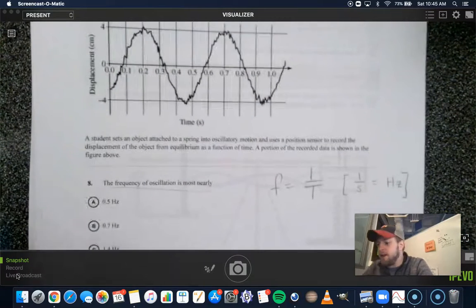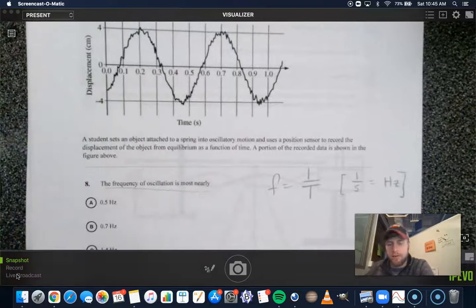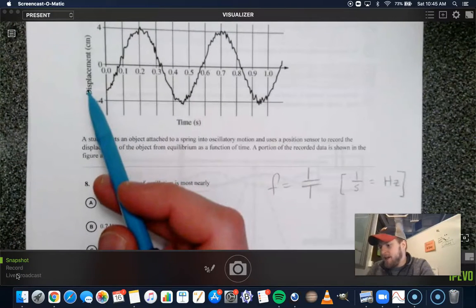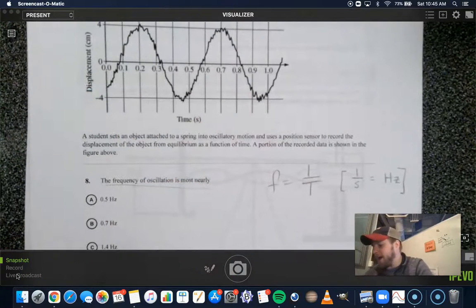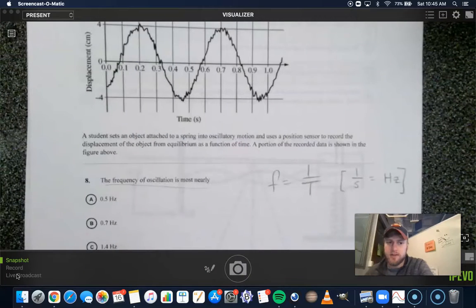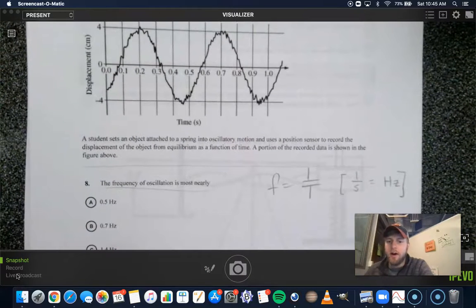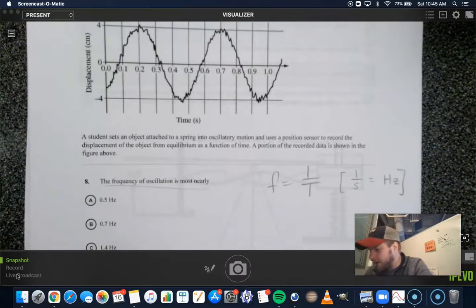Now, it's kind of interesting. They could give us a velocity graph, a displacement graph, or an acceleration graph. Really, they could give us any kind of graph here that shows the simple harmonic motion. And all we need to do is, well, we can do this in two ways.